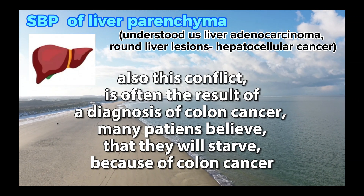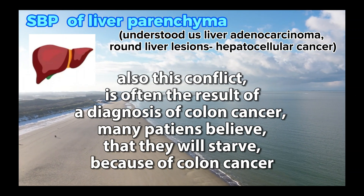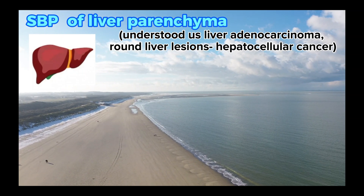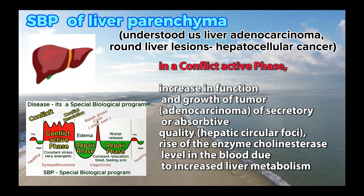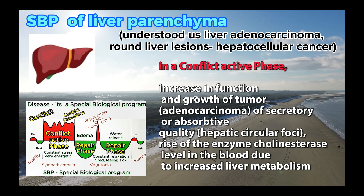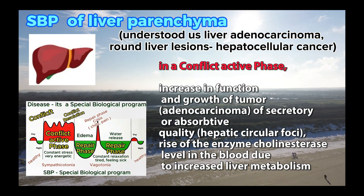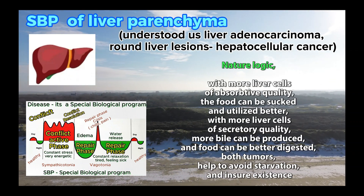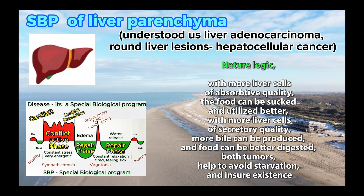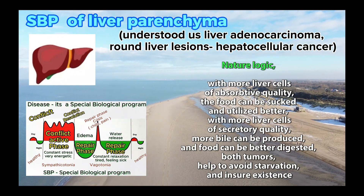Also, this conflict is often the result of a diagnosis of colon cancer — many patients believe that they will starve because of colon cancer. In the conflict active phase: increase in function and growth of tumor adenocarcinoma of secretory or absorptive quality, hepatic circular foci, rise of the enzyme cholinesterase level in the blood due to increased liver metabolism. Food can be absorbed and utilized better with more liver cells of secretory quality, more bile can be produced, and food can be better digested. Both tumors help to avoid starvation and ensure existence.